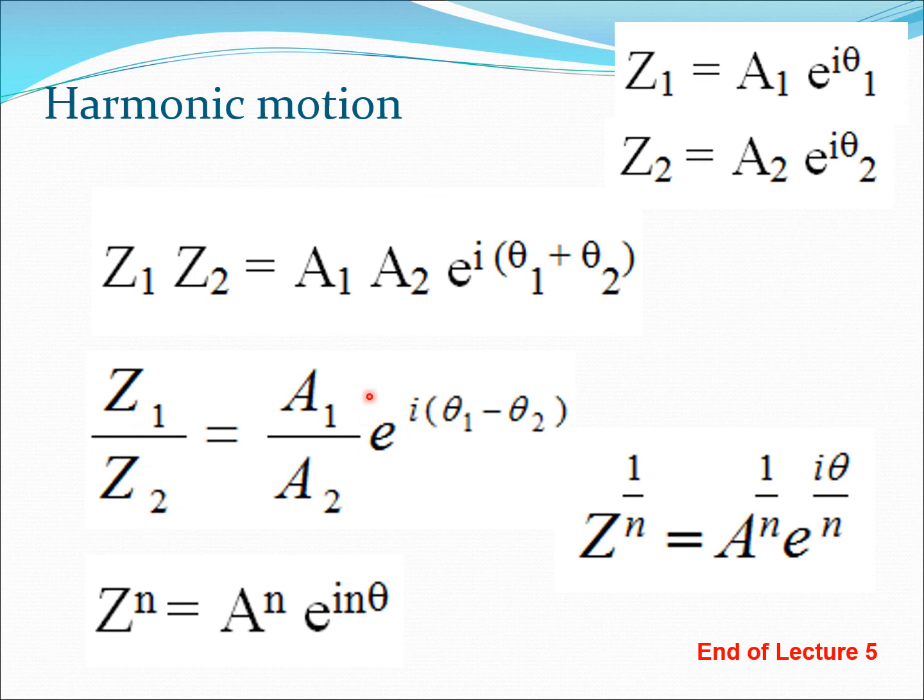Similarly division would be much simpler here. You would get i(θ1 - θ2). If you want to raise to the power, that's also very simple. So both A and e are raised to the power n. And similarly if you want to take the 1 by nth power, that is also very simple. You can simply create this here and it becomes 1 by n here and iθ by n here.